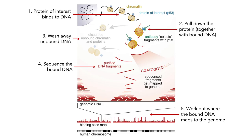The method works like this: you start with your protein of interest, which is bound to the DNA — this might be a transcription factor or anything that binds to DNA. The second step is to fragment that DNA, and then pull down the protein together with whatever DNA is bound to it. You can pull down the protein any way you like, often with an antibody that selects for the protein you're interested in.